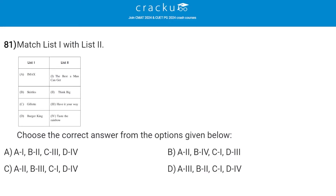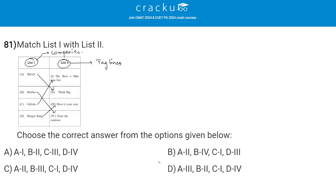Try to match list 1 with list 2. In list 1 we have top companies: IMAX, Skittles, Gillette, and Burger King. In list 2 we have taglines for those companies. For IMAX, the tagline is Think Big. For Skittles, the tagline is Taste the rainbow. For Gillette, the tagline is The best a man can get. And for Burger King, the tagline is Have it your way. So the answer is Option B.